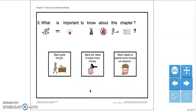Last question. What is important to know about this chapter? Mark quits his job, Mark will need to save more money, or Mark needs to spend more money on popcorn? Mark will need to save more money. That's right. If Mark wants to buy the video game system, he will need to save more money. We're going to learn more about budget plans in the next chapter.